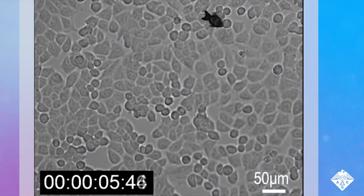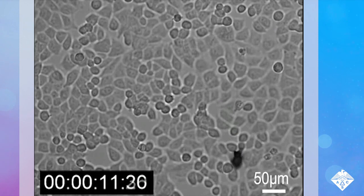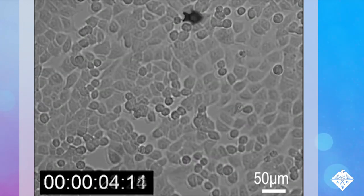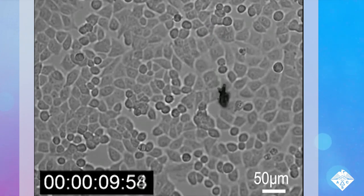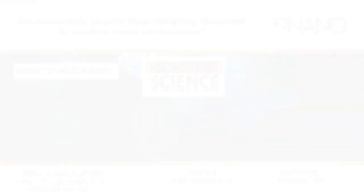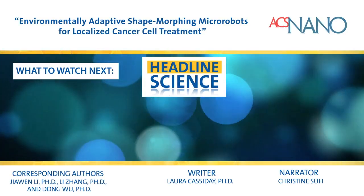The researchers say that before the micro robots can be used for cancer treatment, they need to be made even smaller to navigate real blood vessels, and a suitable imaging method must be identified to track their movements in the body.